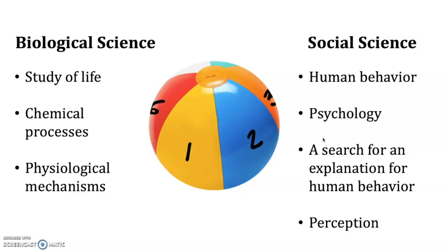Although genetic modification is biologically sound and safe, there's also another type of science that comes into play — social science. Social science is the study of human behavior, it's psychology, it's a search for an explanation for human behavior, and it's perception. People's acceptance or support of genetically modified organisms has a lot to do with social science. If people don't accept the science, then it's not really going to progress and move forward. Both of these types of science have to be in place — they impact one another.